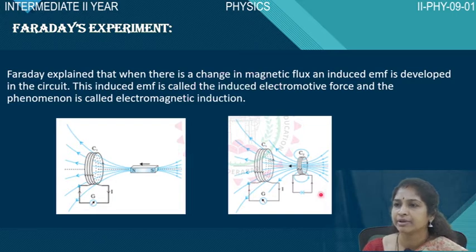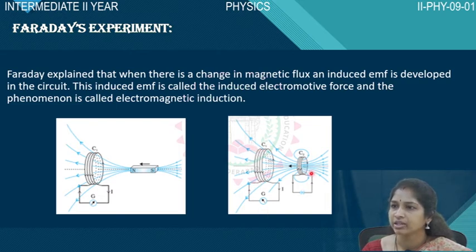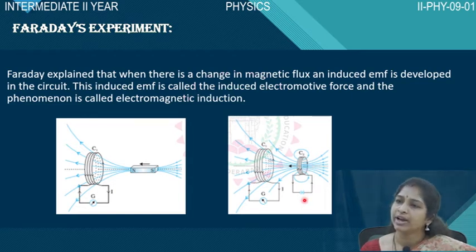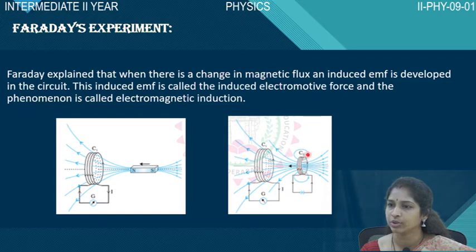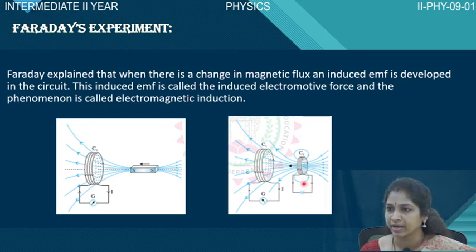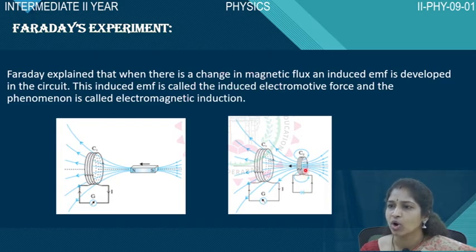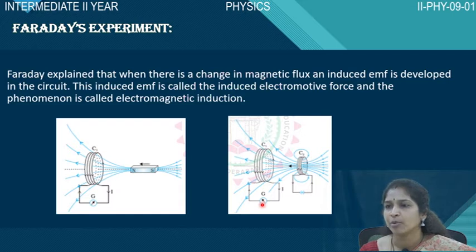In the second experiment, there is a coil connected to a galvanometer, and another coil connected to a battery. When the battery is connected, current passes through coil C2. According to Oersted's experiment, this current-carrying coil acts like a magnet. When this coil C2 is brought towards coil C1, there is a deflection in the galvanometer. When coil C2 is moved away from coil C1, the galvanometer shows deflection in the opposite direction — the same effect observed in the first experiment.